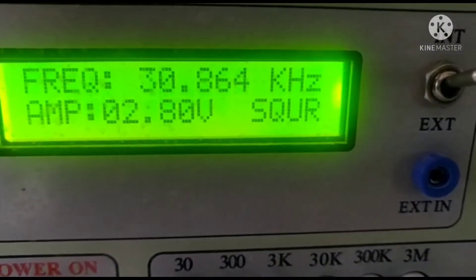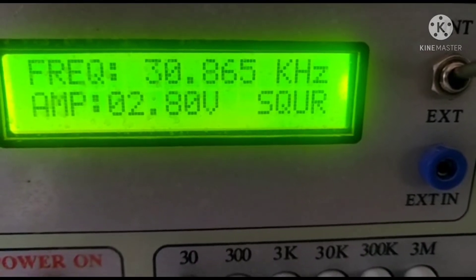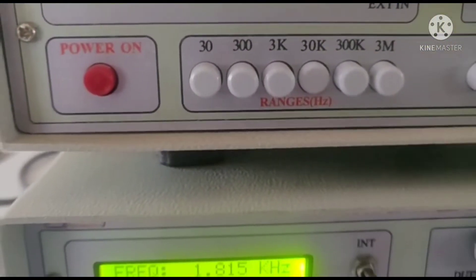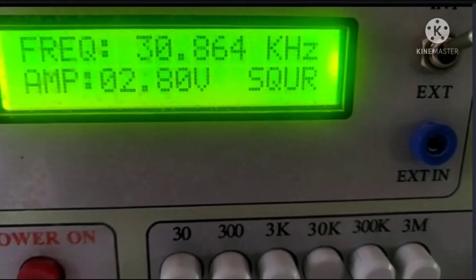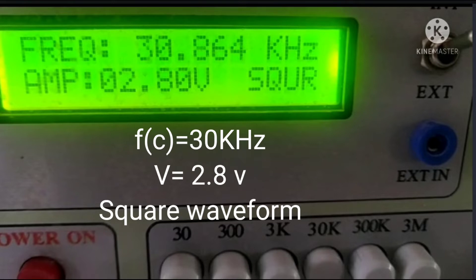See, here we have selected one function generator as a carrier frequency. And another function generator as a modulating frequency. Here the carrier frequency is 30 kilohertz, 2.8 volt square waveform.